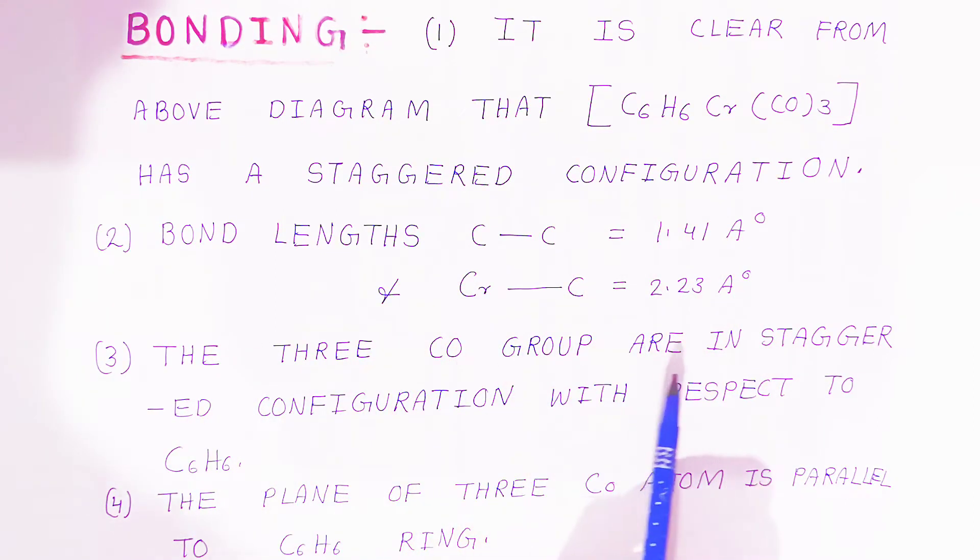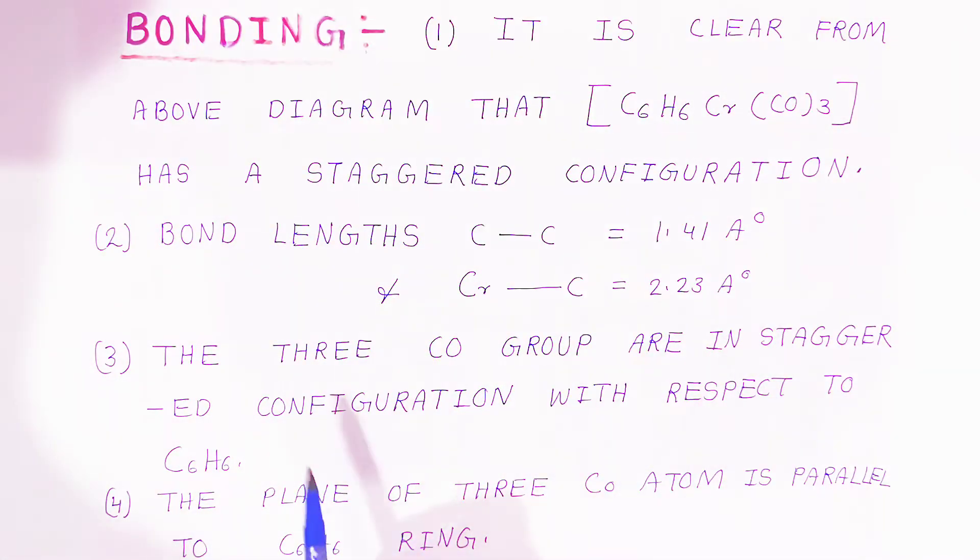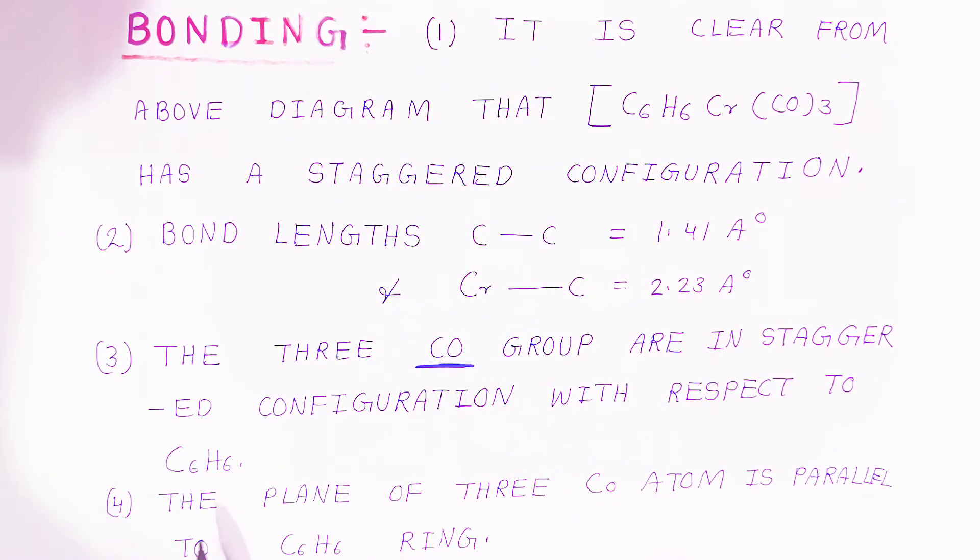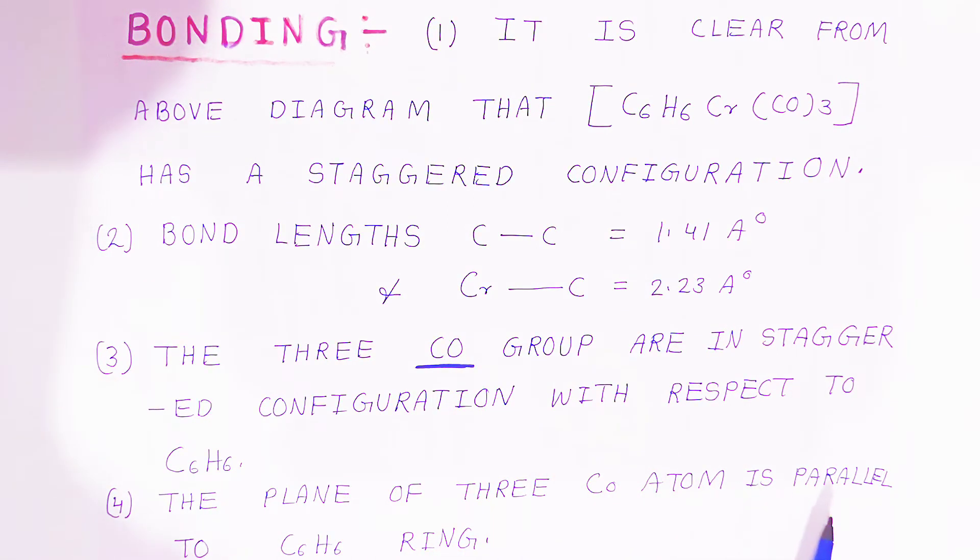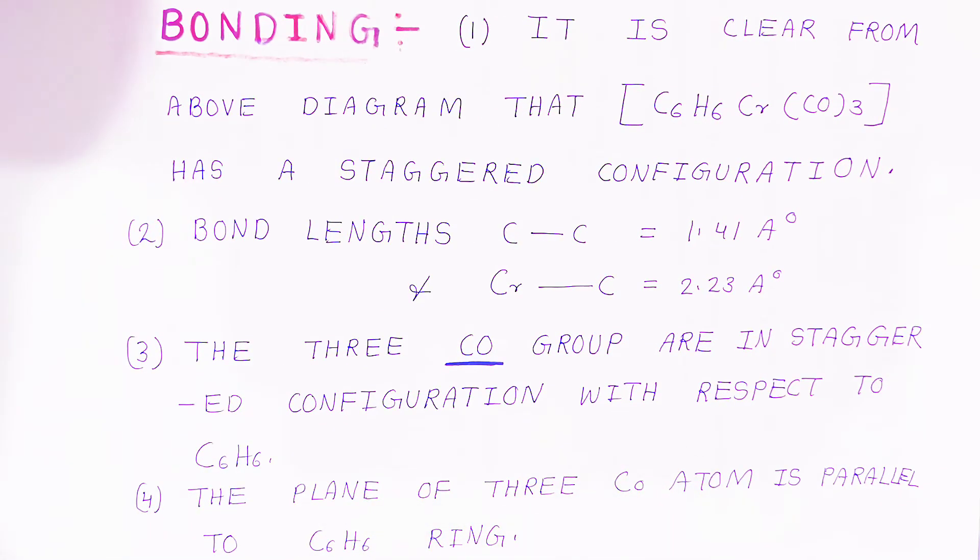The three carbonyl groups are in the staggered configuration with respect to the benzene. They are present in staggered form. Now the plane of the three carbon atoms is parallel to the benzene ring. This is all about the bonding in the benzene-chromium-tricarbonyl complex.